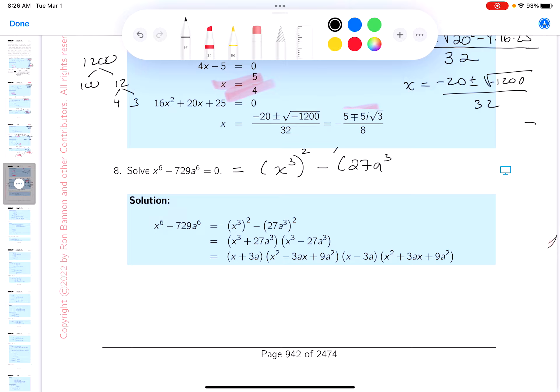Then you get a³ squared, and I can factor this thing. This would be x³ minus 27a³. And then you would get x³ plus 27a³, all right?